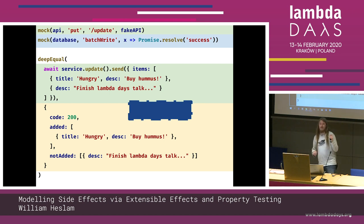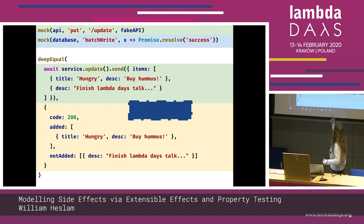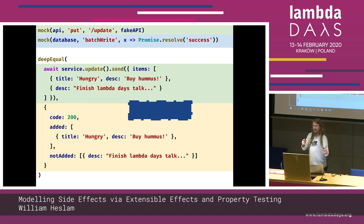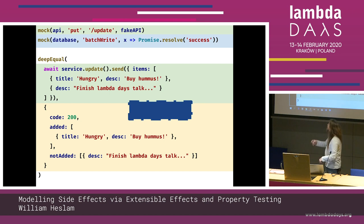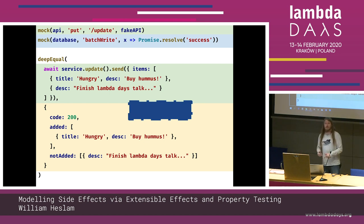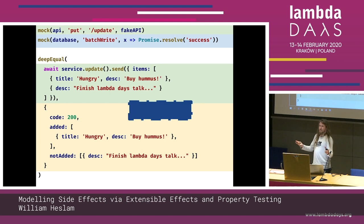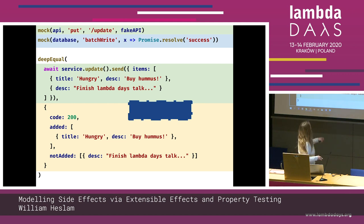Furthermore, all your dependencies are implicit. There's nothing in the function's type signature or name that tells us it uses a batch write function on the database or listens to the update URL. You just have to know that. If I built this, went on holiday, and someone added a new feature — they might have changed batch write to adding items individually but left the old mock in place. So now it's mocking a part of the database you never even use. That's an implicit dependency which can cause problems. The pros: your function is left relatively unchanged — you don't have to change your code to test it.